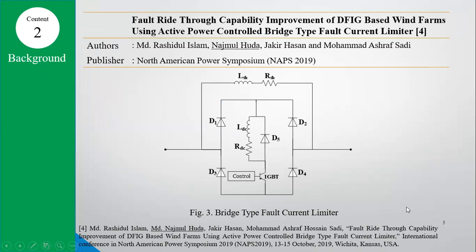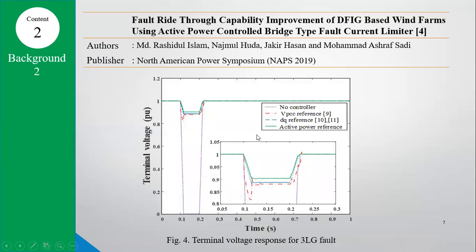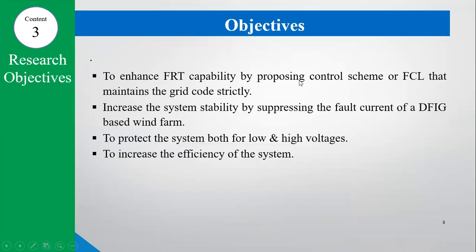We will start with the paper. In 2016, Kaliman and Rashid published a paper where they proposed this bridge-type fault current limiter. This fault current limiter uses gate pulse and voltage-based control method. In the active power control, we have to control the IGBT pulse. This is the control scheme to perform the active power reference, published in the North American Power Symposium.